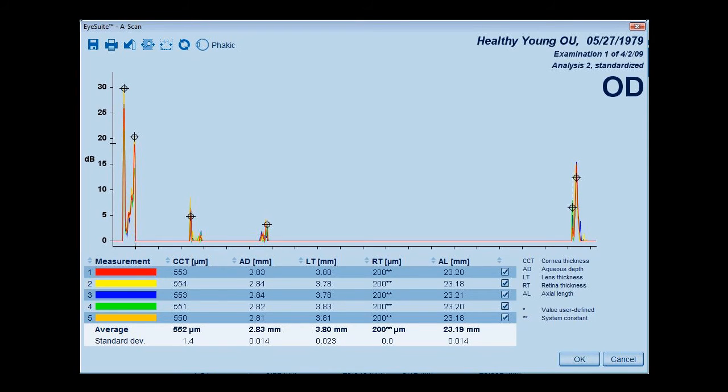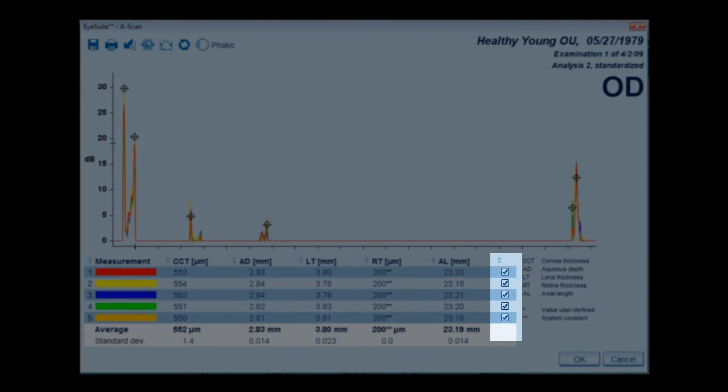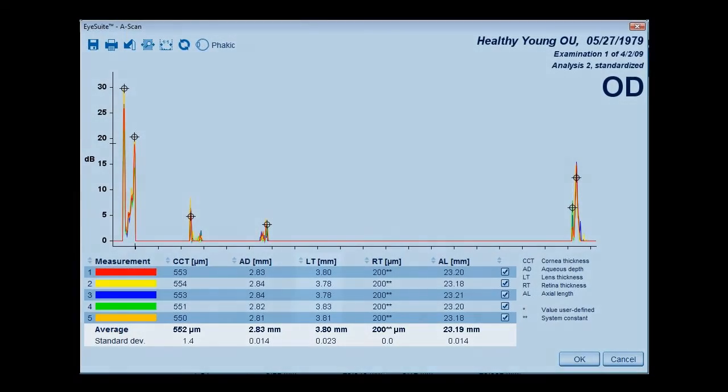The lens thickness values may also be excluded individually with a right click of the mouse. Measurement data can be excluded entirely by unchecking the box to the right of the measurements. Excluded measurements will remain in the database and are not permanently deleted.